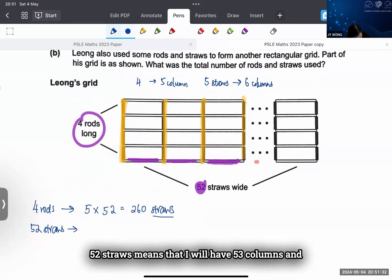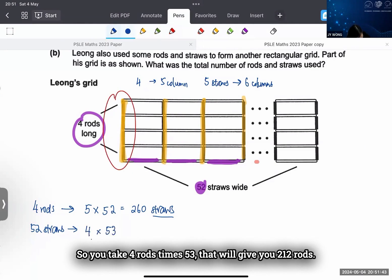So you take 4 rods times 53, that will give you 212.